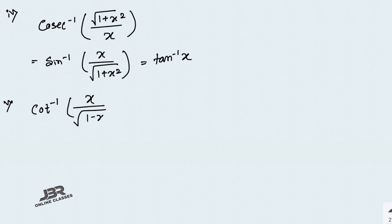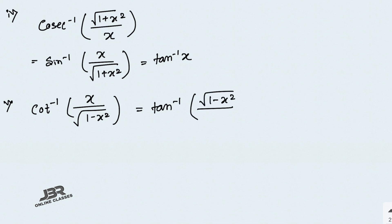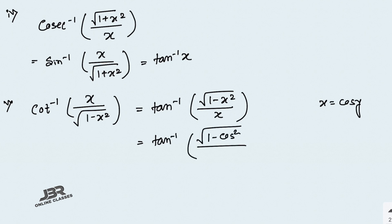Sum number 5: cot inverse of x over root(1 minus x²). This equals tan inverse of root(1 minus x²) over x. Let x equal cos y, so the numerator becomes root of (1 minus cos²y) and the denominator is cos y.